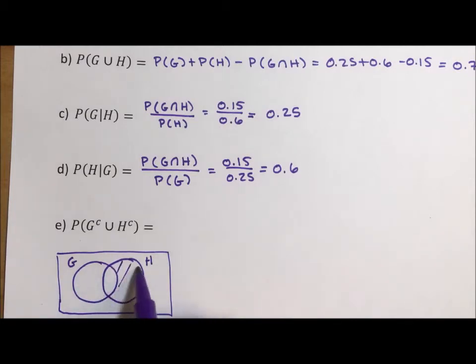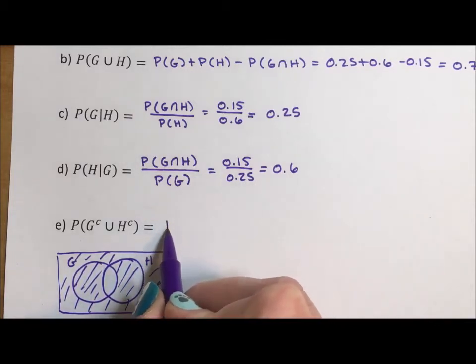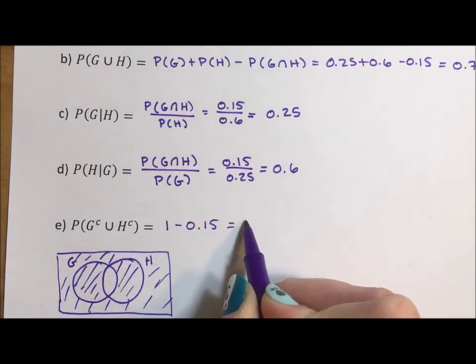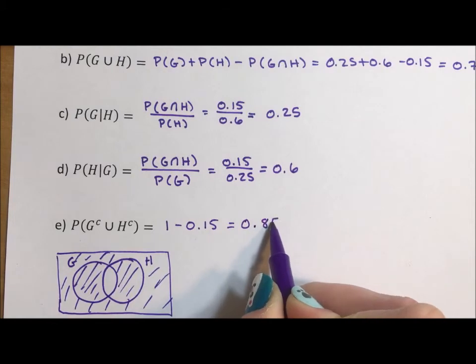G complement would be this area and the area outside. H complement would be this area and the area outside. So G complement union H complement is everything but the intersection. So this should be 1 minus 0.15, which is 0.85.